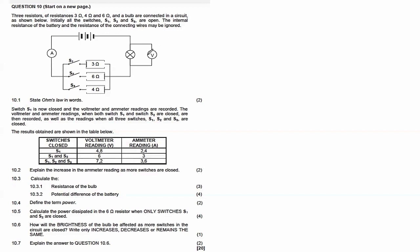Note that the voltmeter is connected in parallel to the bulb, so the voltmeter reading shows us the voltage across the bulb only — not the voltage of the parallel branch. The ammeter, connected closer to the battery, is recording the total current. So the voltmeter records voltage of the bulb, while the ammeter records the total current.